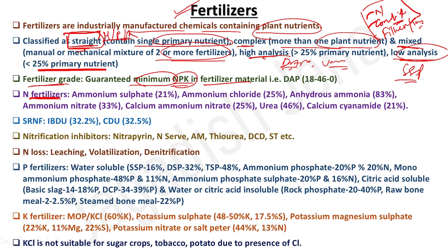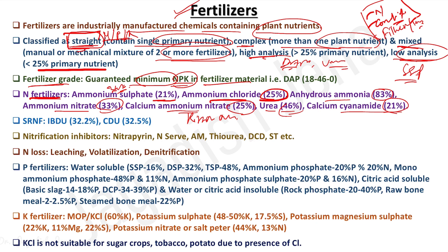Key nitrogenous fertilizer examples: ammonium sulfate contains 21% nitrogen and 24% sulfur; ammonium chloride contains 25% nitrogen; anhydrous ammonia has the highest nitrogen at 83%; ammonium nitrate has 33% nitrogen; calcium ammonium nitrate (also called Kishan Khad) has 25% nitrogen; urea contains 46% nitrogen; calcium cyanamide contains 21% nitrogen.